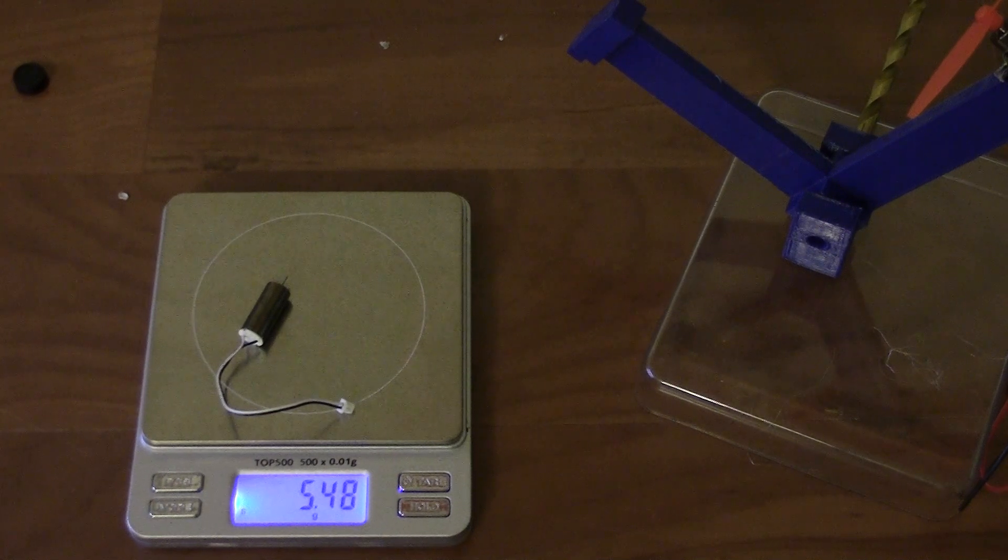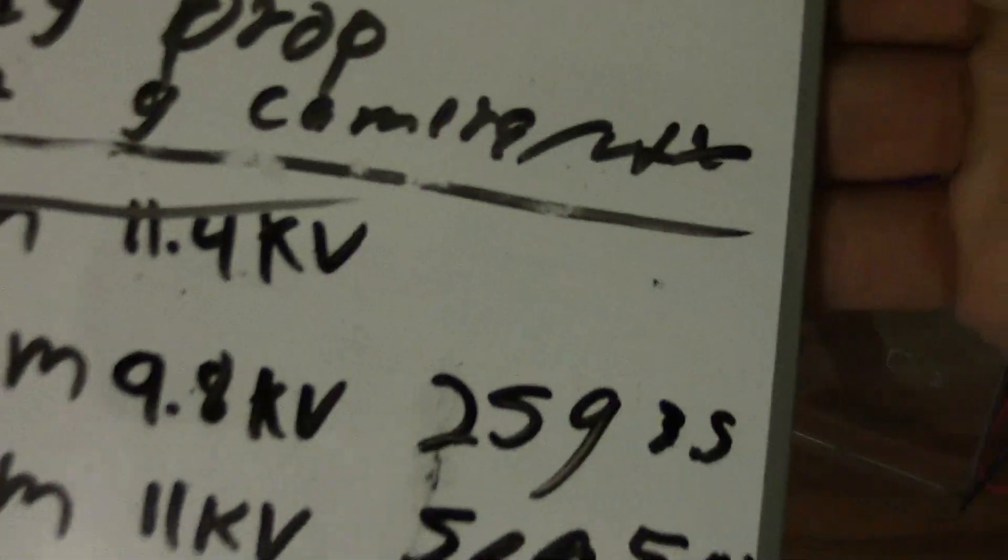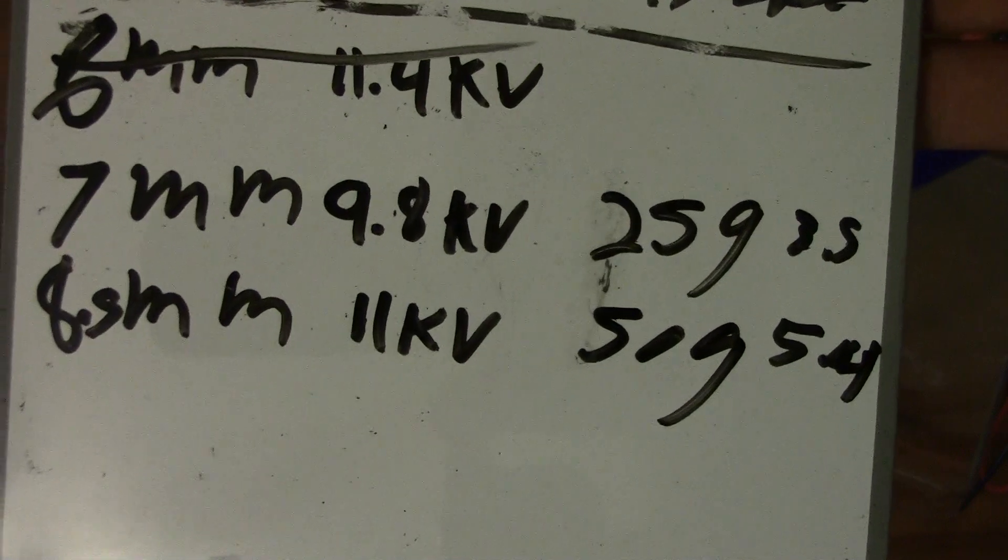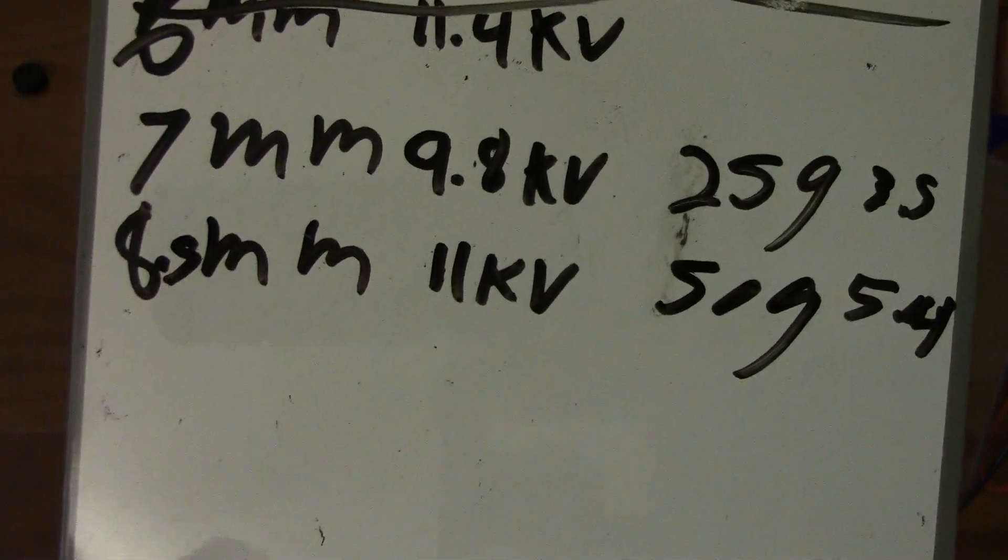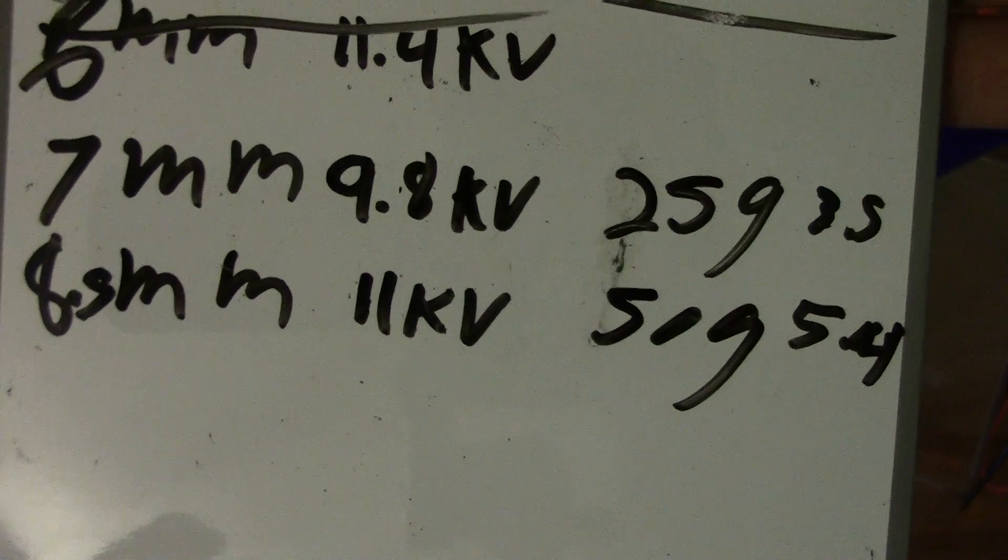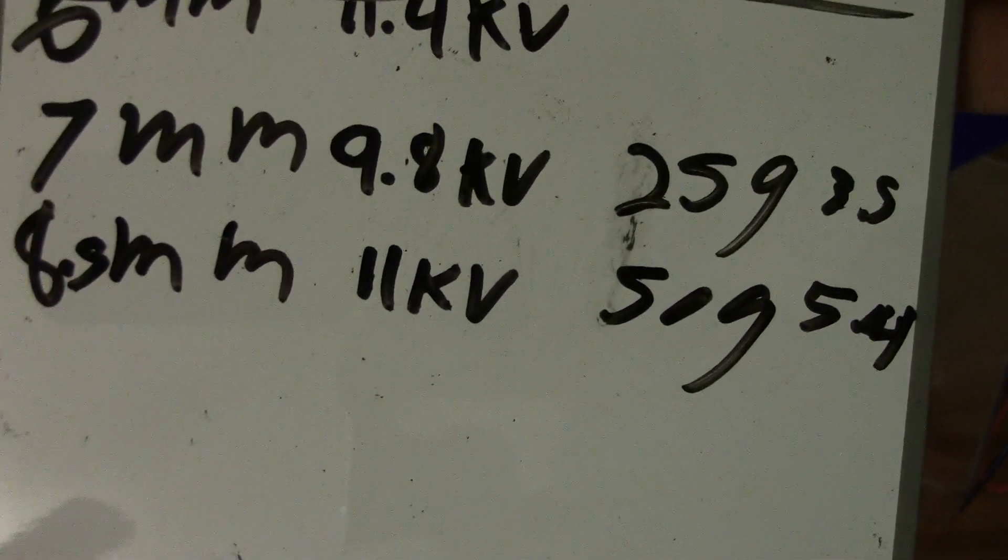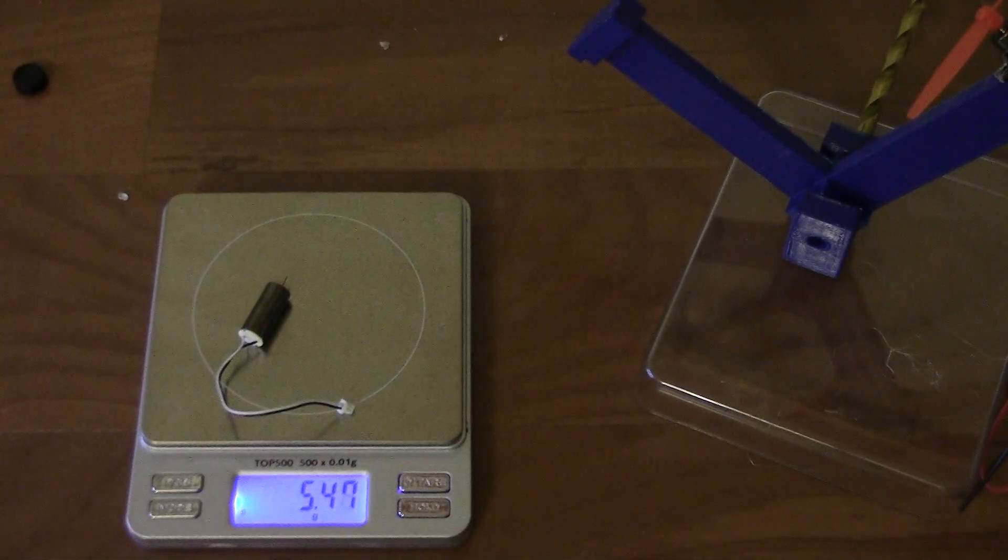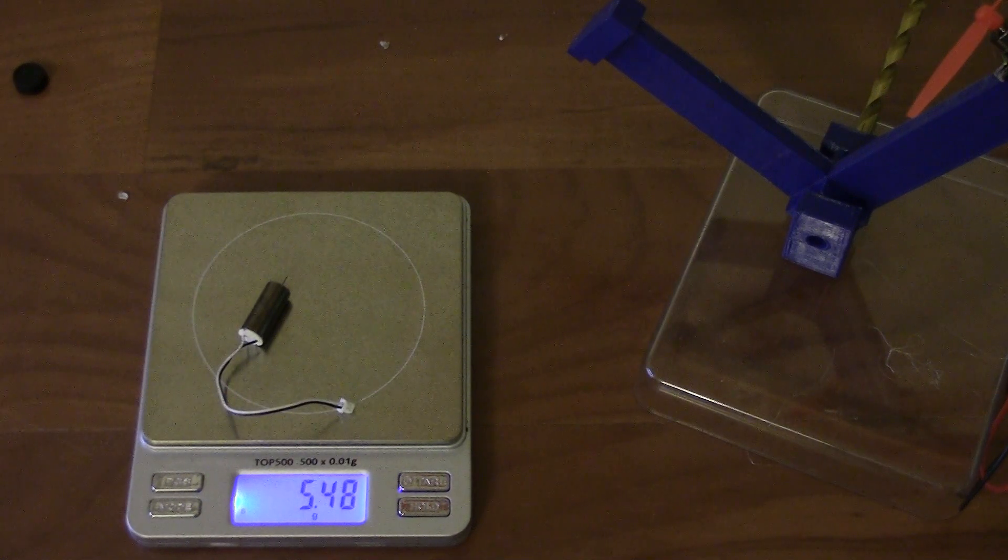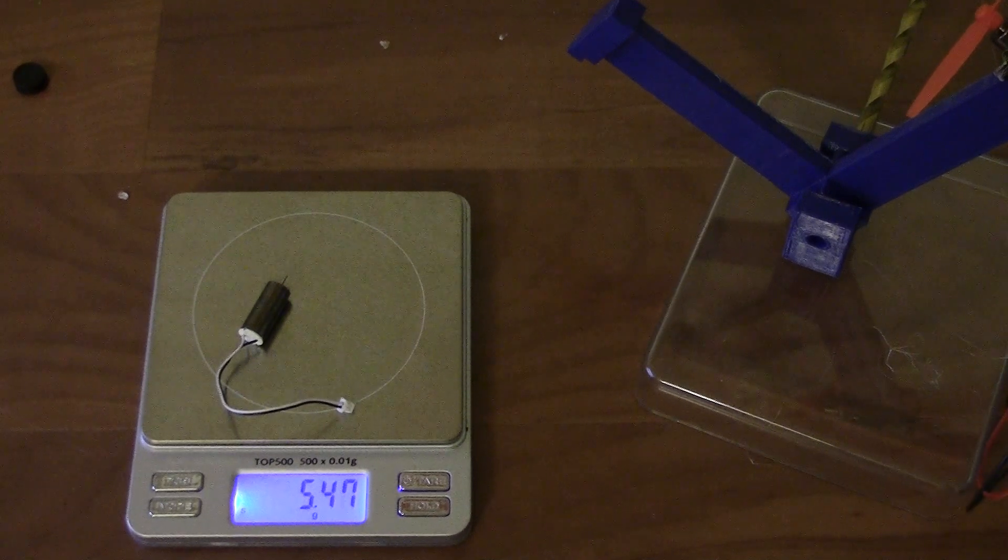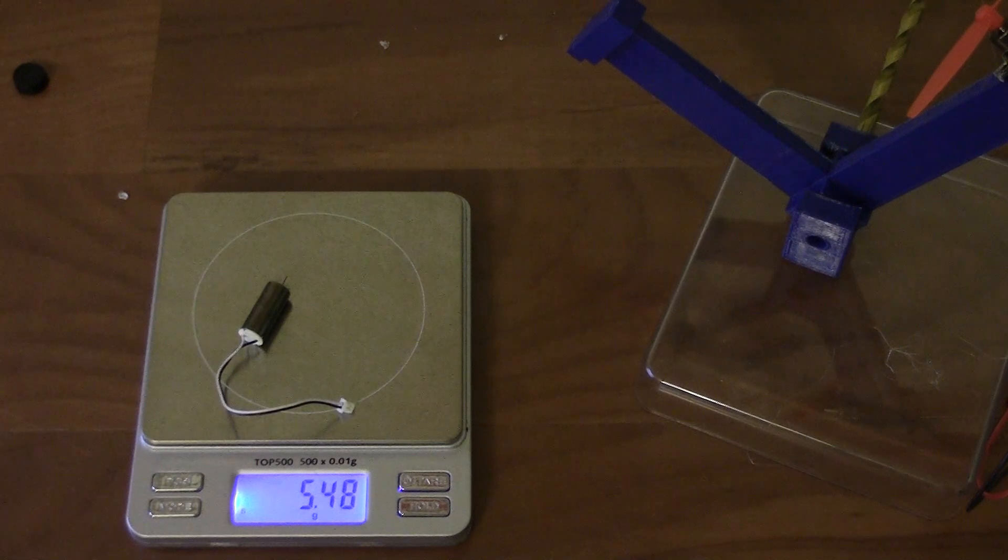As you can see here from our results, 7 millimeter 9.8 kV is 25 grams of thrust, 3.5 grams of weight. Or you have an 8.5 motor 11 kV, 50 grams of thrust, and weighs 5.4 grams itself. So obviously the 8.5 millimeter is definitely worth its weight, being double the thrust yet obviously not double the weight, is absolutely amazing.